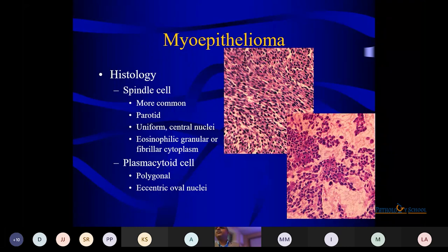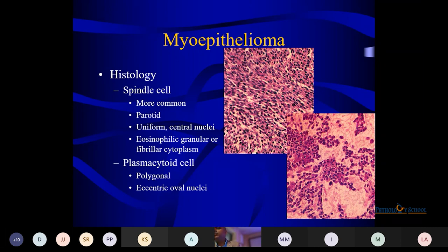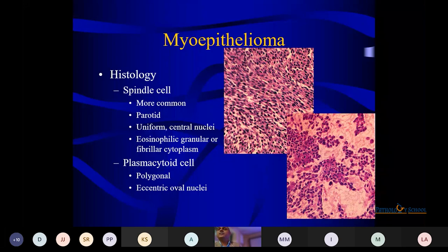When seeing any spindle cell lesion in the salivary gland, three to four things come to mind: skeletal muscle, smooth muscle, myoepithelial, or myofibroblastic origin. If smooth muscle — MSA positive; then SMA and desmin positive indicates smooth muscle origin. If desmin and calponin are negative, do MyoD1/myogenin for rhabdomyosarcoma. Myoepithelial cells have both expressions, but myofibroblastic tumors have partial expression. Desmin and calponin may be variably positive, but caldesmone is the definitive stain, though not commonly performed in government setups.